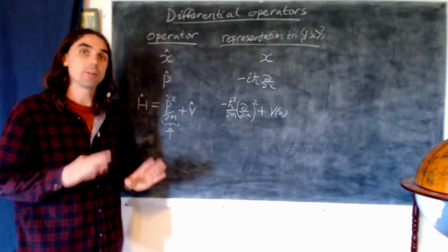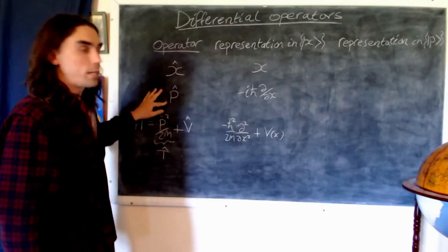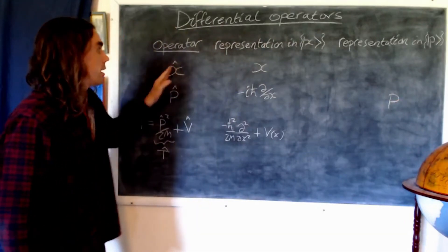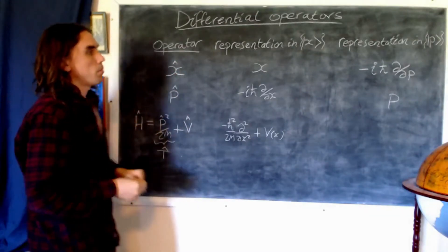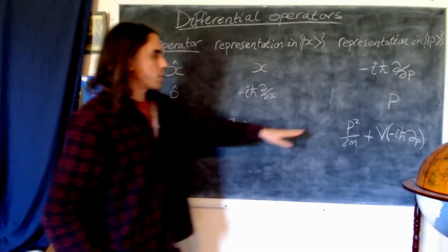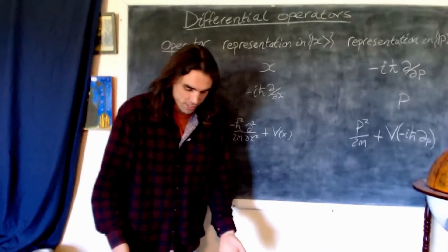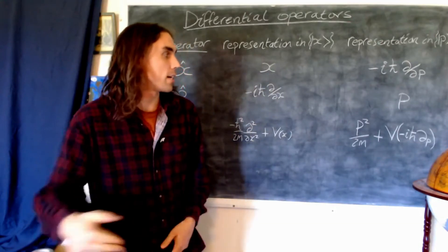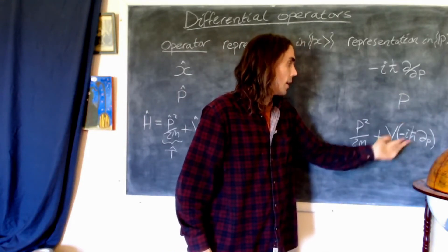Although it won't be a key focus in this course, we could also write things in the momentum basis. The momentum operator takes the trivial form p — just the real number, much as x did in the x basis. The position operator now takes the form minus i h-bar d by dp. The Hamiltonian takes the form p squared over 2m, where p is just the real number p. And the potential V is now a function of minus i h-bar d by dp, a differential operator acting on functions of p, defined by its Taylor series.